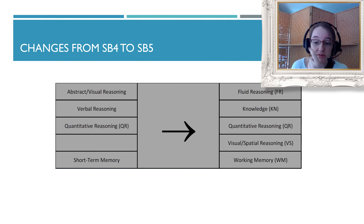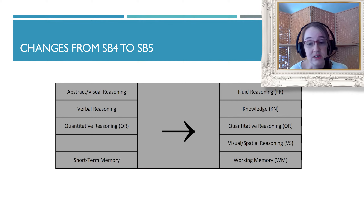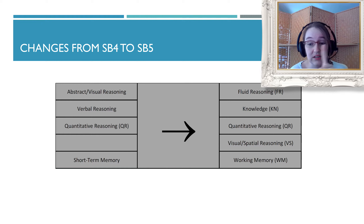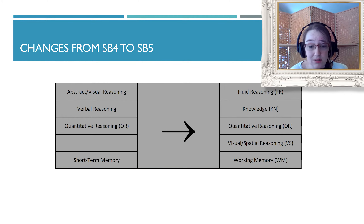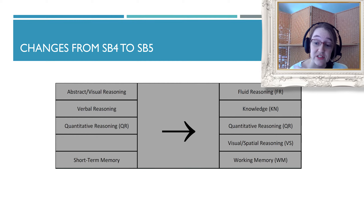Here's the old version on the left. You go from 'abstract/visual reasoning' to 'fluid reasoning,' from 'verbal reasoning' to 'knowledge,' 'quantitative reasoning' stays 'quantitative reasoning,' and from 'short-term memory' to 'working memory.' The big addition is visual and spatial, because that is an important aspect of intelligence that's not typically assessed.